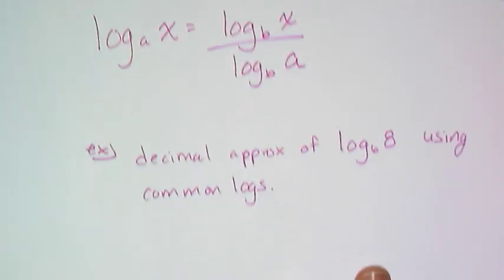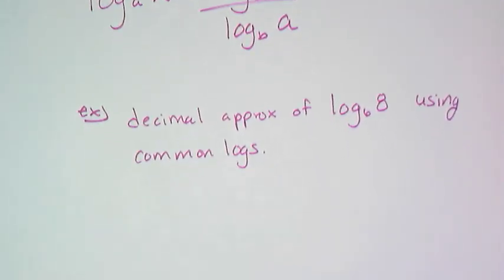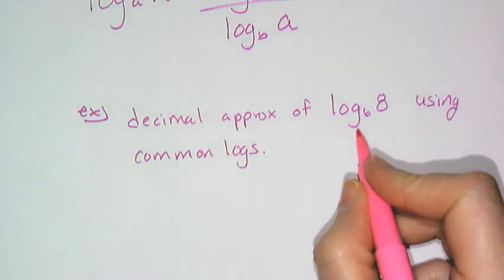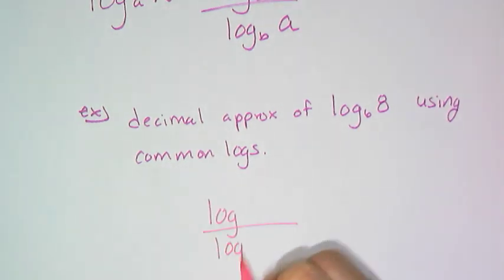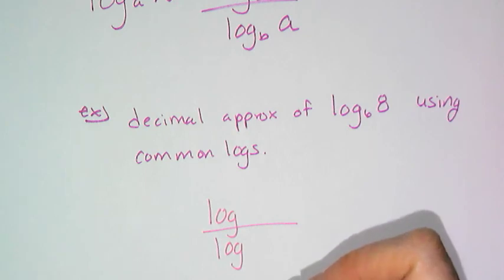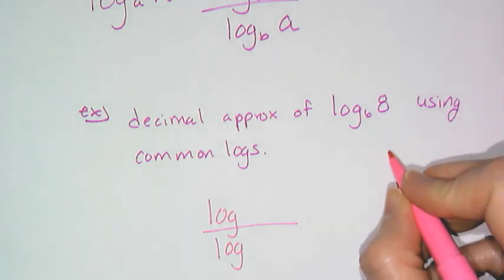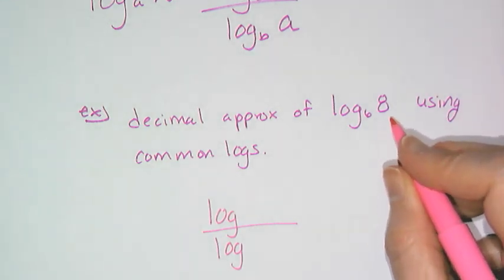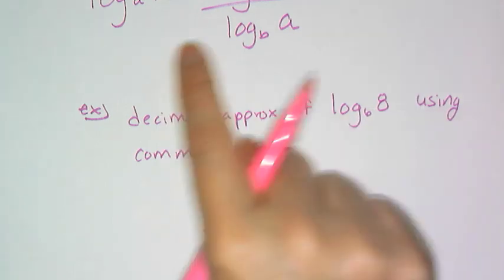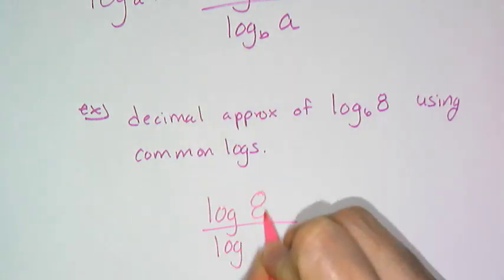So if I want the decimal approximation of log base 6 of 8 using common logs, meaning base 10 logs, like you just have some scientific calculator that only lets you use base 10, you can use the change of base formula to figure out the decimal approximation. So you know you want to change it to log base 10, and luckily for us log base 10 we don't have to write the little subscript. And then you have to decide whether it's log 8 or log 6 in the numerator.